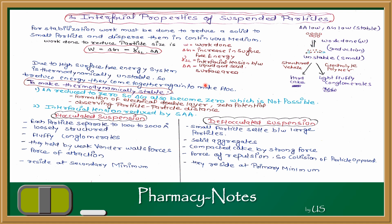If we consider other parameters to stabilize the thermodynamic system, we can add surface active agents to reduce the interfacial tension so that delta G will be zero, but that is not possible. We can keep the particles small, and we can detect the formation of an electrical double layer, check the zeta potential, and check if the system is stable or not. The other thing we can do is determine if the dispersion is flocculated or deflocculated.